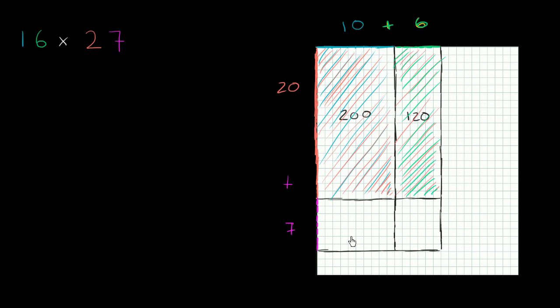Now what's the area of this section right over here? Well, it's 7 high and it is 10 wide. So it's going to be 7 times 10, or 70. And it'll have an area of 70 square units.